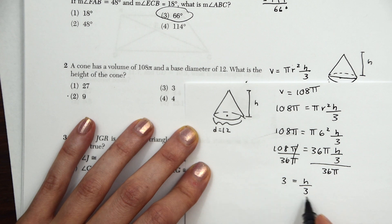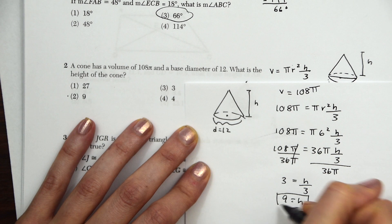And now to get h alone, we're just going to cross multiply 3 times 3, and we get 9 equals h, which is our answer.